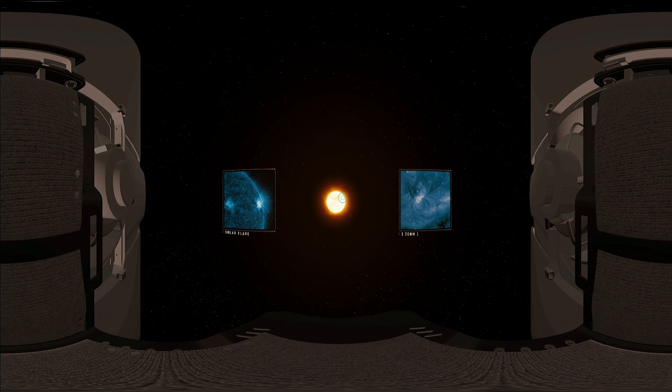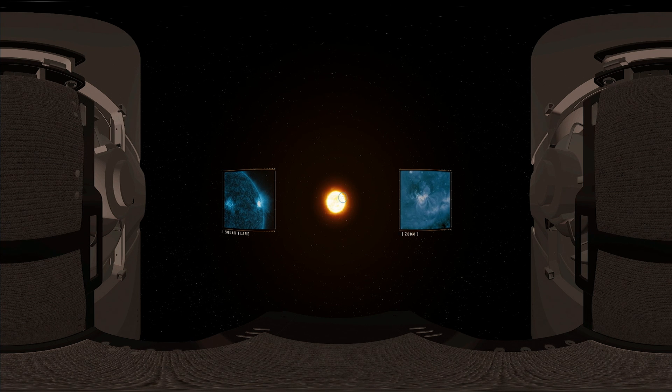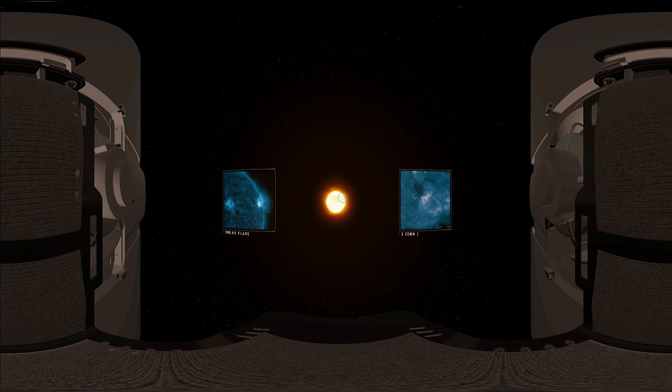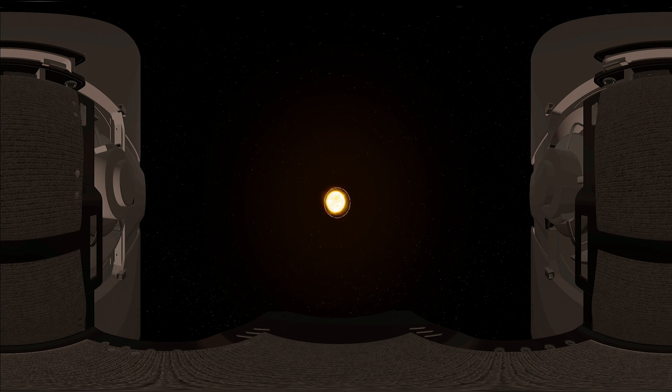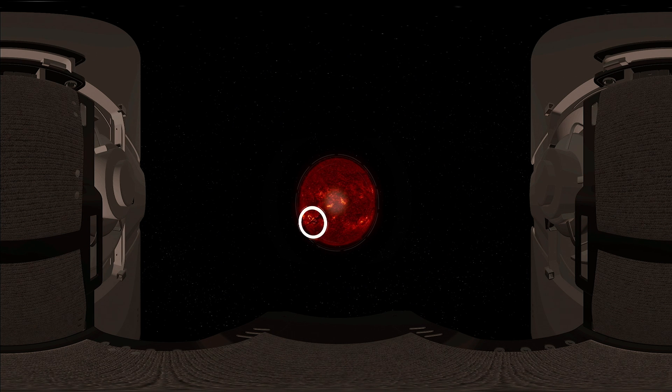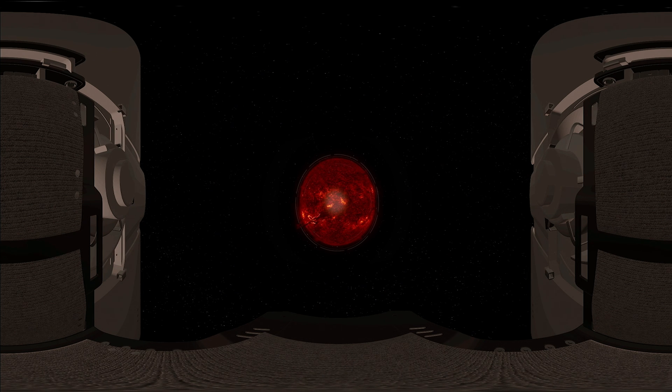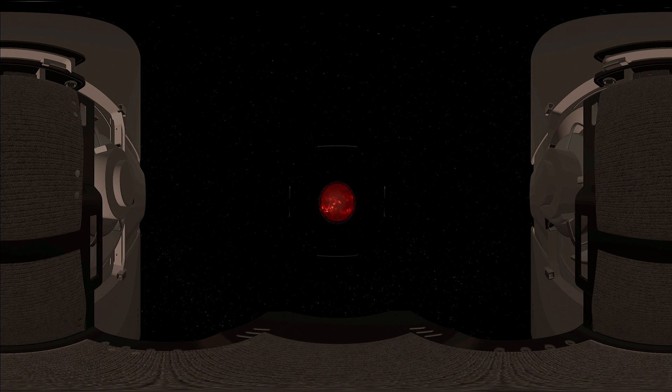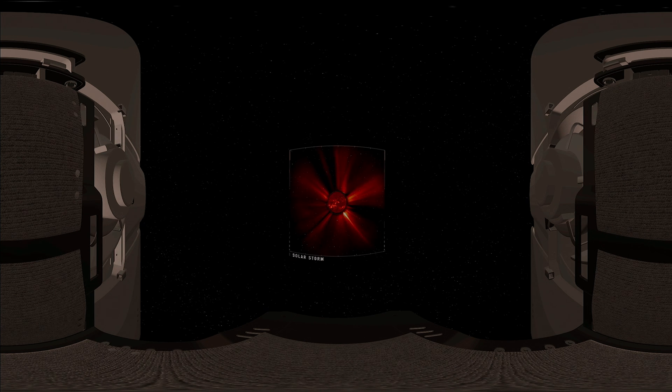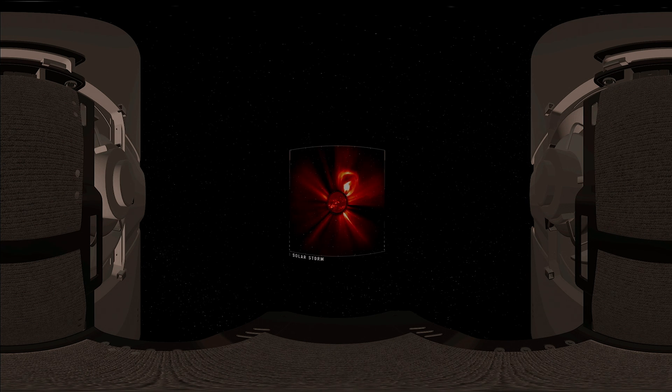The flare is an intense emission of energy across a broad spectrum, from radio waves to X-rays. In some cases, the magnetic field restructures itself and takes the shape of a cloud, which is jettisoned into space. This is a solar storm, or coronal mass ejection.